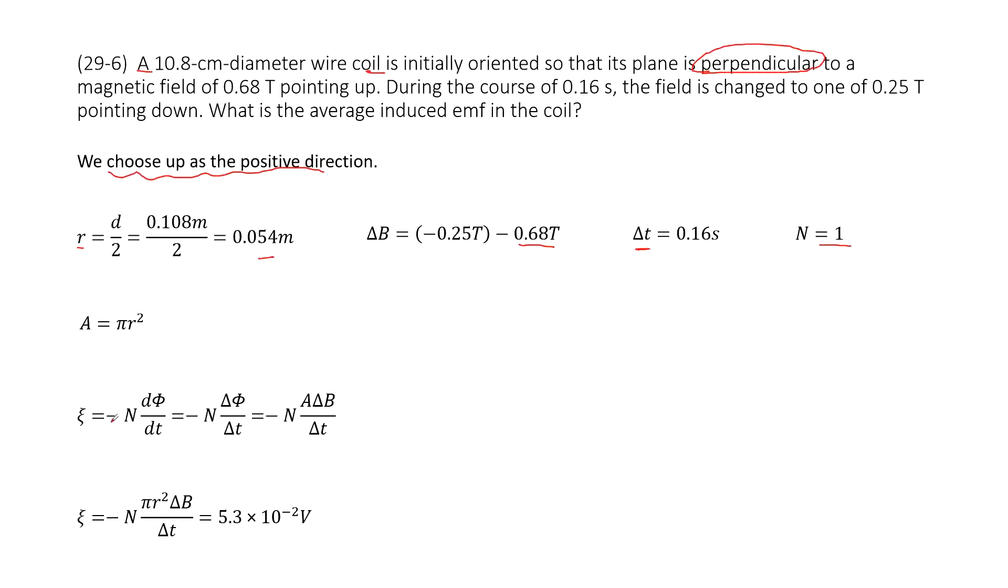So now we can write down the field is low. It is negative NdΦ over dt, as we need to find average induced EMF. So that means in a certain time, we need to find, in a certain time delta, how much is the magnetic inflow flux changes. So use deltaΦ over delta t. And then we can write deltaΦ as A times delta B.